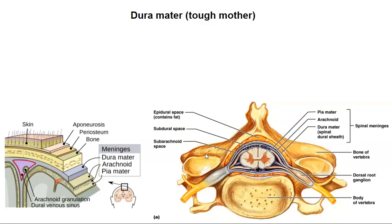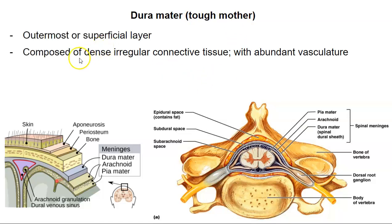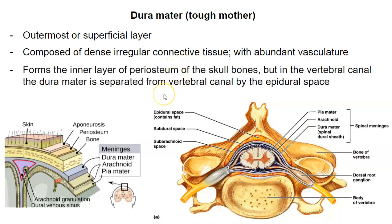First let's look at the dura mater — that's the most superficial layer, and that's Latin for 'tough mother.' It's called tough mother because it's composed of dense irregular connective tissue, which is filled with tough collagen fibers. It also has arteries and veins running through it. It forms the inner layer of periosteum of the skull, but in the vertebral column, the dura mater is separated from the vertebral canal by the epidural space.